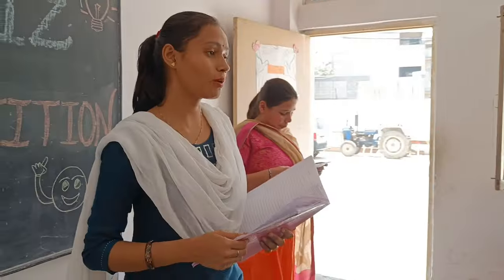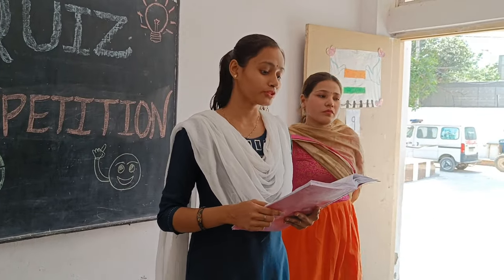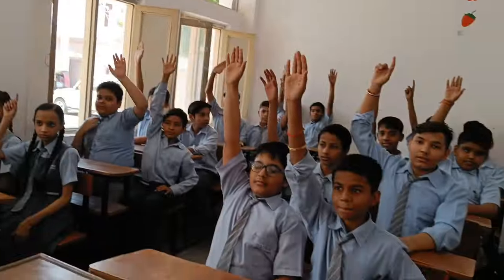Today we are all gathered here for this competition on the importance of voting and casting. The first question: the Election Commission of India was established on — Option A: 26th November 1949, Option B: 25th January 1950, Option C: 26th January 1950. The answer is Option B, 25th January 1950.